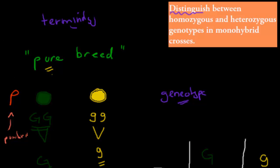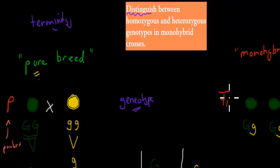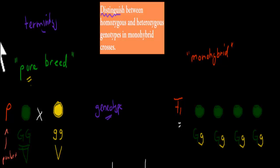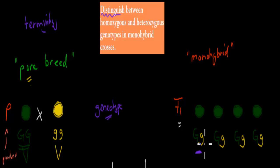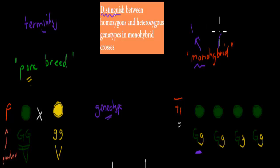Then we crossed these two — a pure green with a pure yellow — and got the F1 generation. We said these were the monohybrids because they were not pure; they had different types of alleles, one green and one yellow allele. Mono meant one, and hybrid meant a combination, so we were looking at one trait: the difference between yellow and green peas.